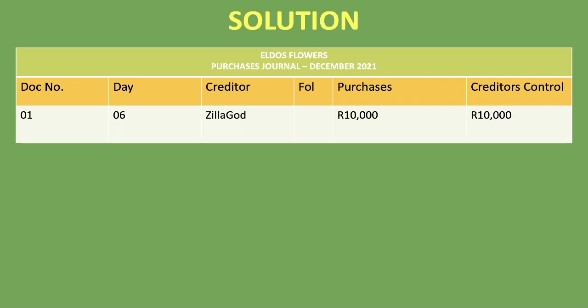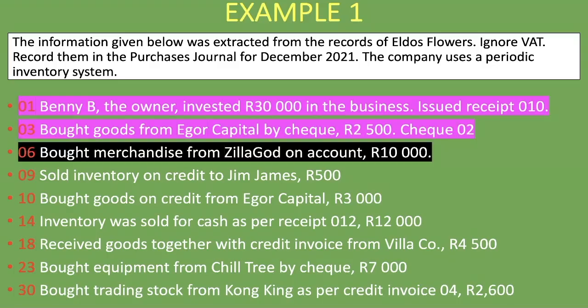Note that the purchases column and creditors control column show the same amount here because we are ignoring VAT. If VAT were included, the purchases column would be excluding VAT while creditors control would be including VAT. We highlight this transaction in black to show it has been recorded.